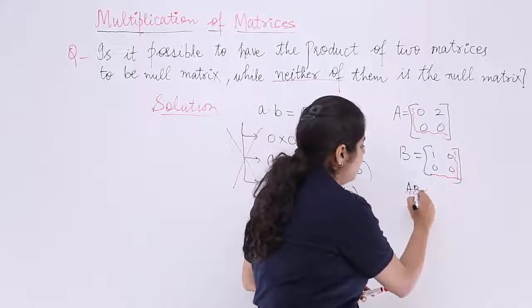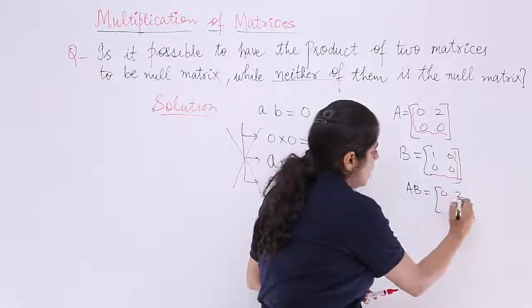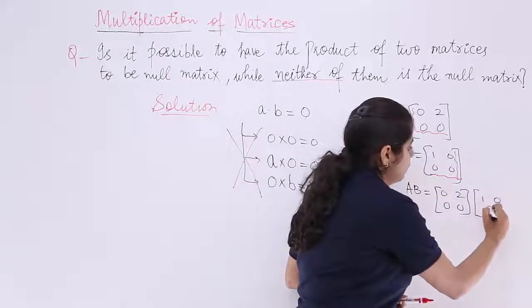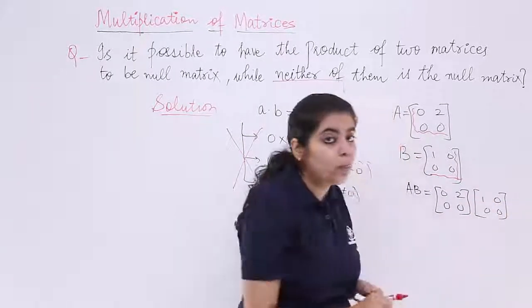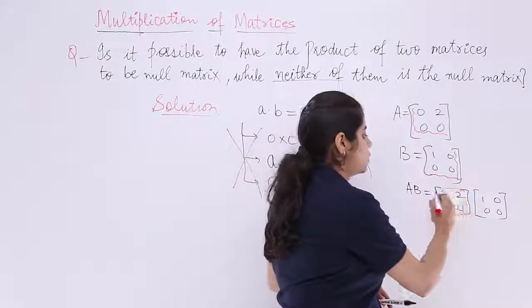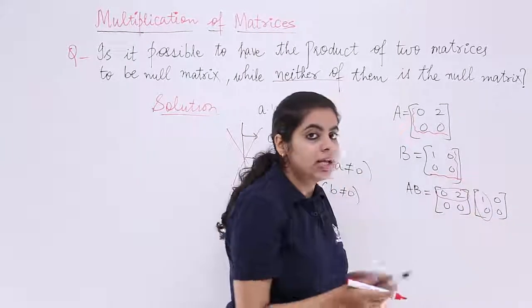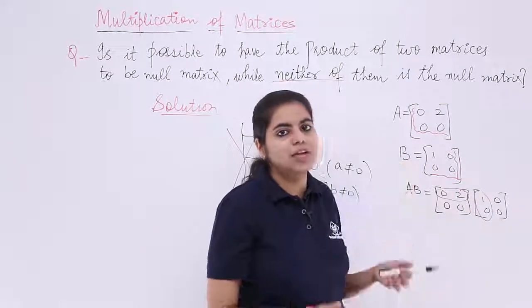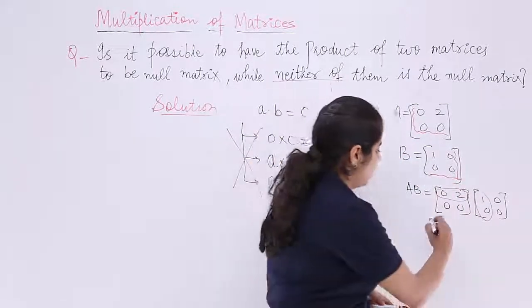What about AB? AB means I have to take the product of A with B. Now it is first row, first column, then first row, second column, then second row, first column, second row, second column. Let's do it.